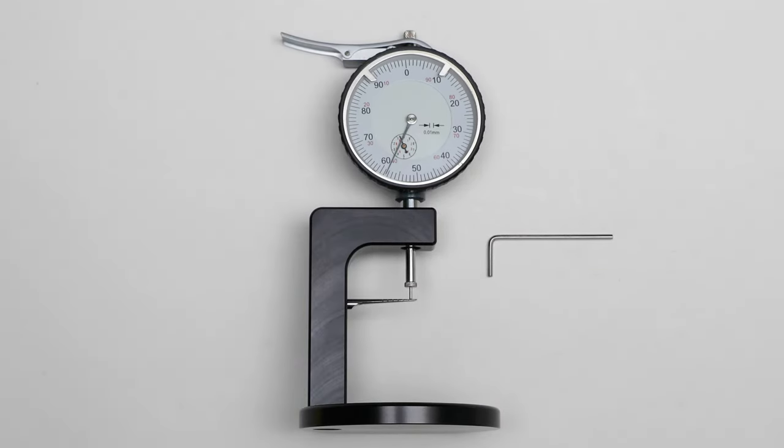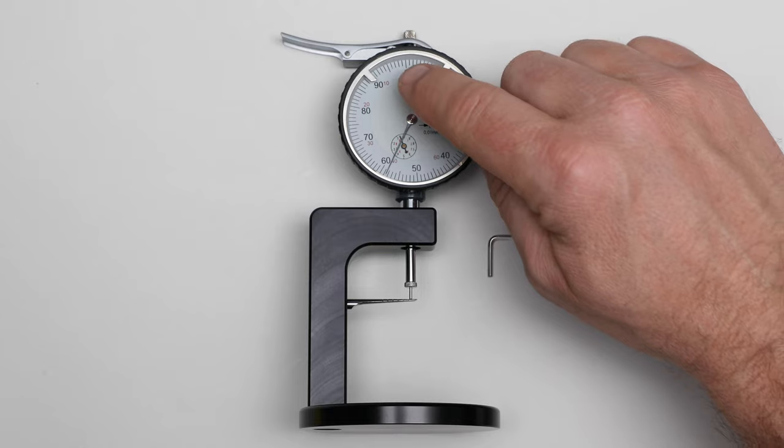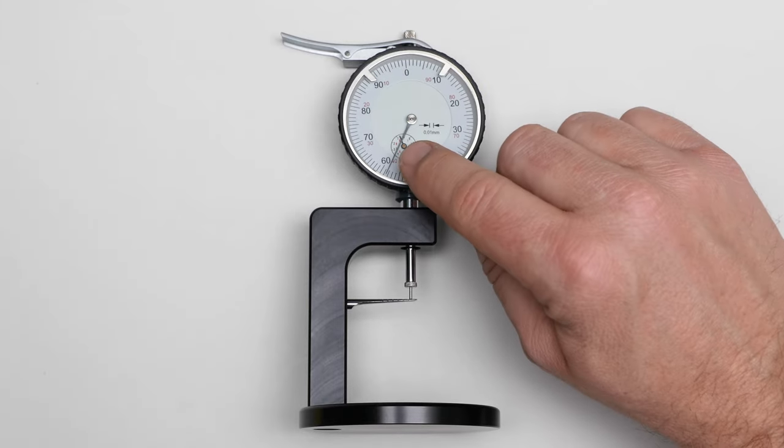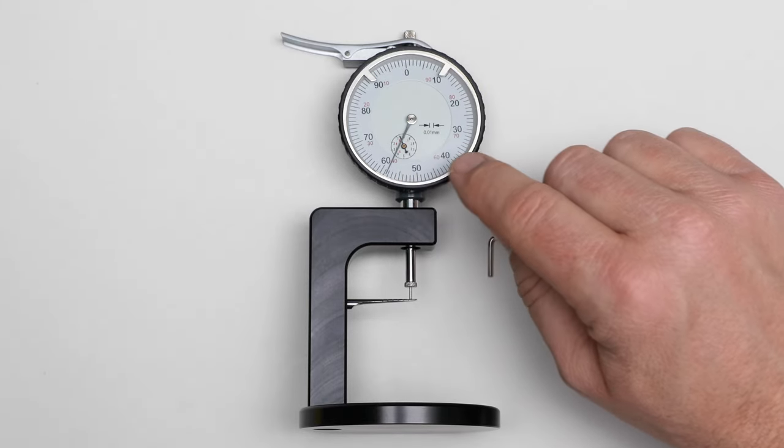Today we will learn how to calibrate your dial indicator. We prefer to have the long pointer in a 12 o'clock position and the small one on zero.